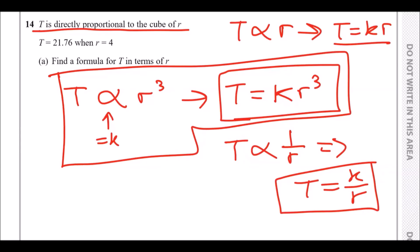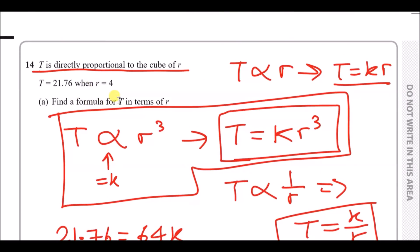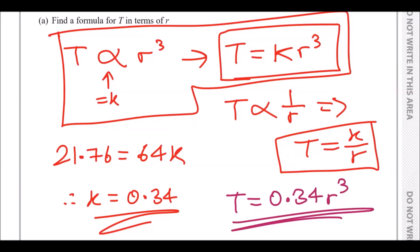T = 21.76 when r = 4. Substituting: 21.76 = k times 4 cubed. 4 cubed is 64, so 21.76 = 64k. Dividing both sides by 64 gives k = 0.34. The formula for T in terms of r is T = 0.34r cubed.